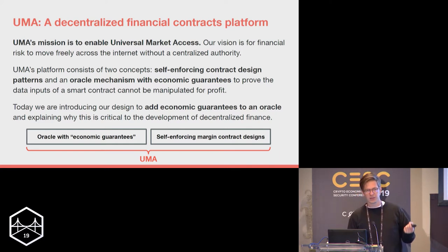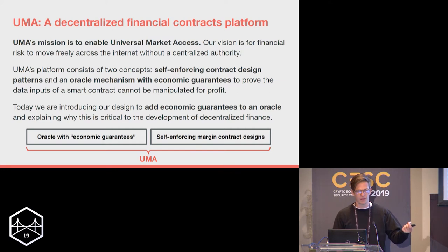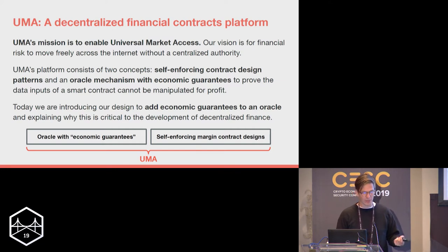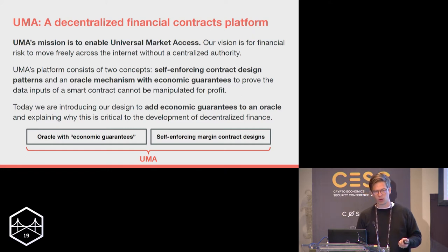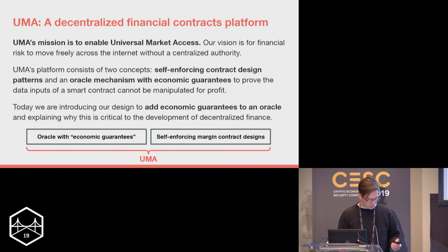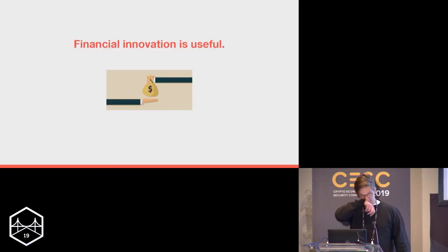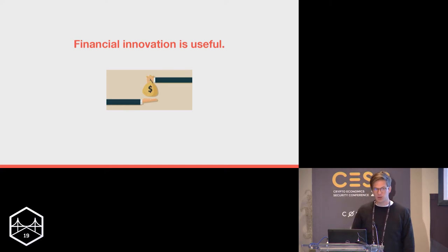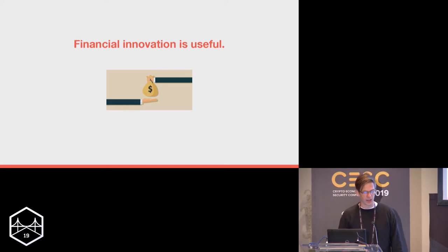The second part, and what we're going to be talking about today, is our oracle design. This is an oracle mechanism to power these financial contract design patterns. We're talking about how to add economic guarantees to an oracle — to guarantee that the oracle system cannot be corrupted and is truly and provably decentralized.